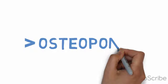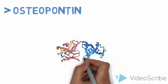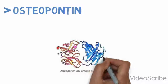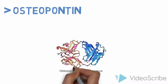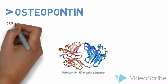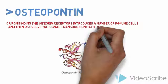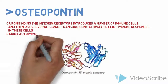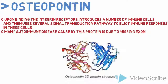Let's learn more about osteopontin. This is a flat 3D protein structure of osteopontin. Upon binding the integrin receptors, it activates a number of immune cells and uses several signal transduction pathways to trigger immune responses. Many autoimmune diseases caused by this protein are due to missing exons.